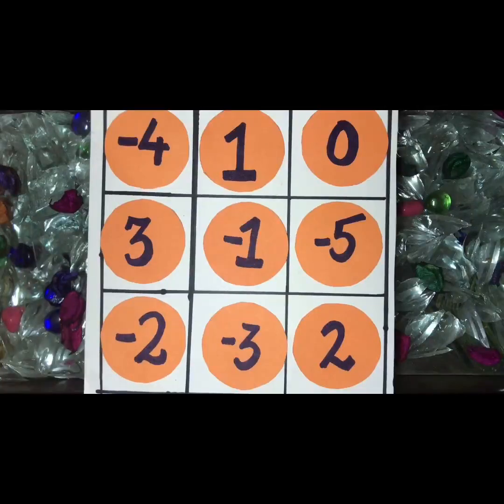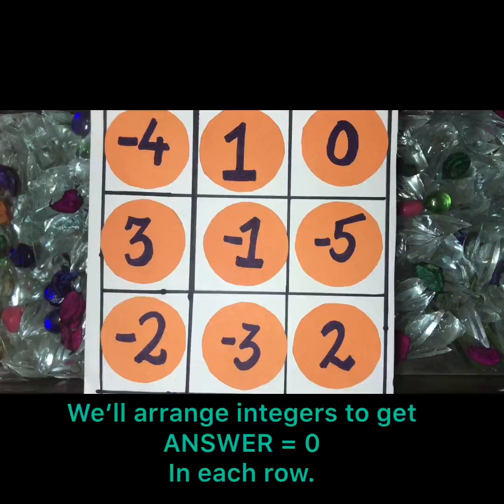So what fun! Now I'll give you a suggestion. What you need to do is you can arrange the similar integers and get the answer of each row as 0. Let's try.